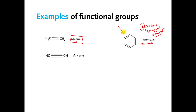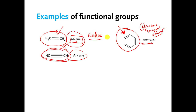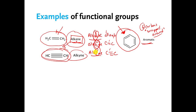If I show you a molecule with this pattern, you should say it has an aromatic functional group. If I show you a molecule with a carbon-carbon double bond, you should say it has an alkene functional group. If I show you a molecule with a carbon-carbon triple bond, you should say it has an alkyne functional group. To help remember: alkanes have all single bonds, alkenes have at least one carbon-carbon double bond, alkynes have at least one carbon-carbon triple bond — and they go alphabetically: A-E-Y.